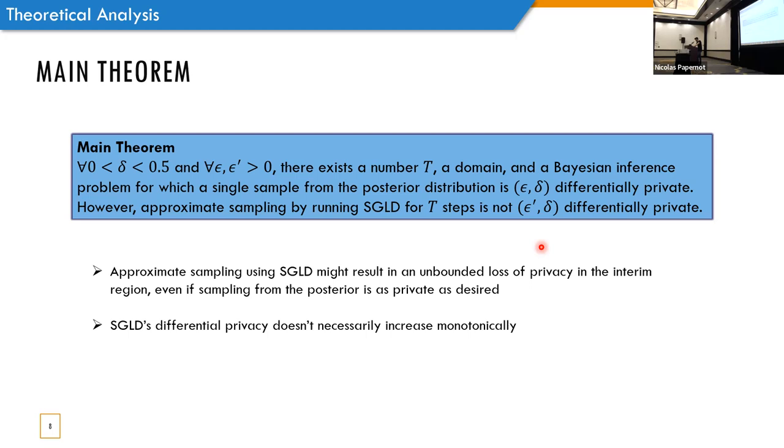So, this is our main theorem. I will go over it really quickly, and then I'll explain what it means. So, for every delta between 0 and 0.5, and epsilon and epsilon tag greater than 0, there exists a number t, a domain and a Bayesian inference problem, for which a single sample from the posterior distribution is epsilon-delta differentially private. However, approximate sampling by running SGLD for t-steps is not epsilon tag delta differentially private. And I'm sure you all followed and understand. But if not, what this theorem means is that approximate sampling using SGLD might result in an unbounded loss of privacy in the interim region, even if sampling from the posterior is as private as desired. And another thing we can see from here is that the differential privacy of SGLD doesn't necessarily increase monotonically.